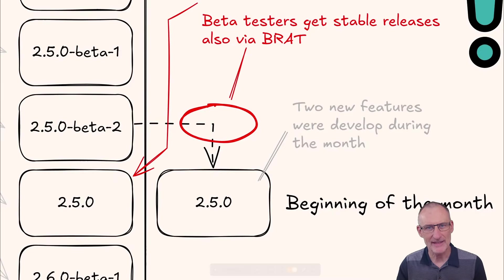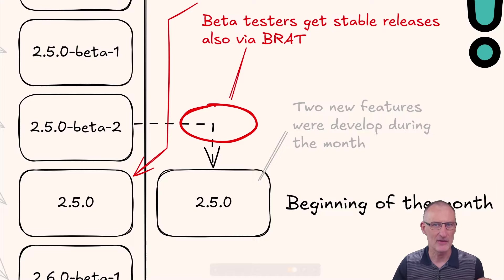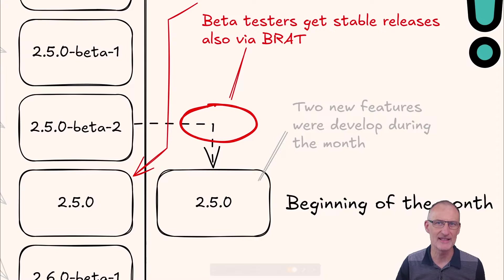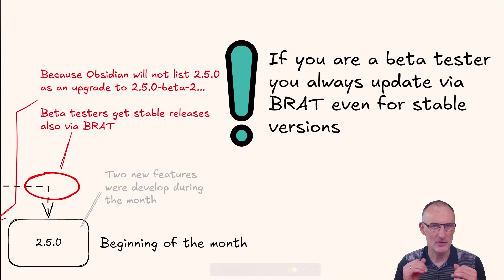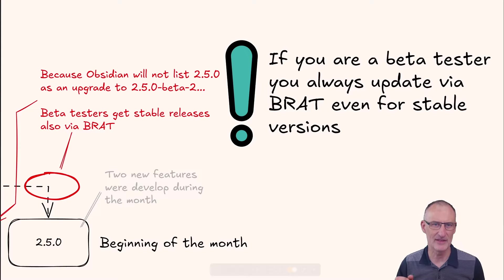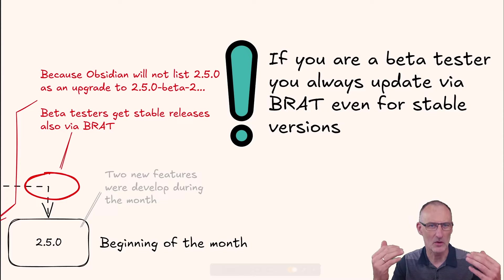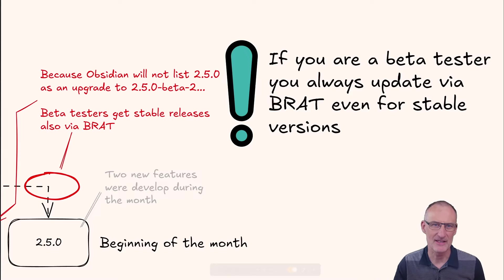There's a technical nuance beta testers need to understand — if you're following the normal channel you don't need to know this. If you're a beta tester you will need to install the stable releases with BRAT as well, because Obsidian will not recognize 2.5.0 as more recent than 2.5.0-beta 2. It is only BRAT that allows you this feature.